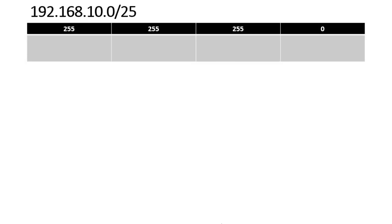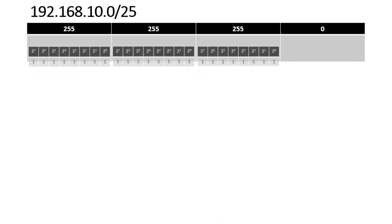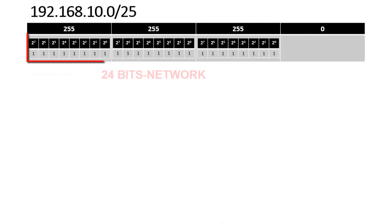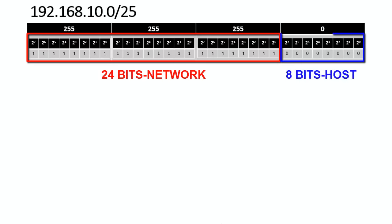The default subnet mask of a Class C IP address is 255.255.255.0 because by default there are 24 bits reserved for the network and 8 bits reserved for the host. But in this scenario the CIDR value is 25, which means there must be 25 network bits. In Class C we only have 24 network bits — so where do we find another 1 bit?